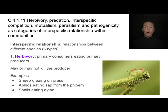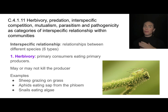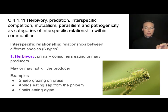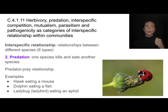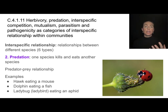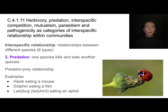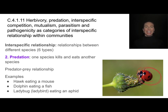Keep in mind that all six types are between two different species living in the same community, and the running theme here is interdependence and interaction. The second type is predation: one species killing and eating another. This doesn't have to involve a primary producer, unlike herbivory. Classic examples include a hawk eating a mouse, a dolphin eating a fish, or a ladybird eating an aphid.